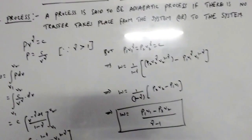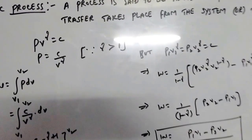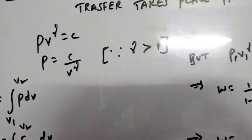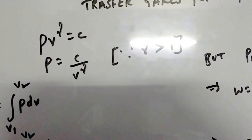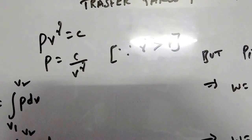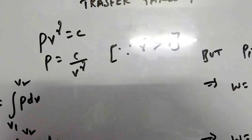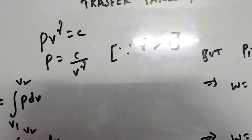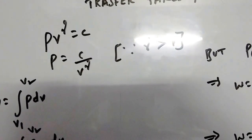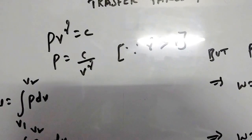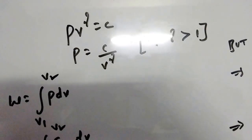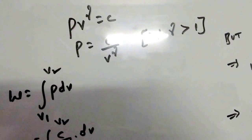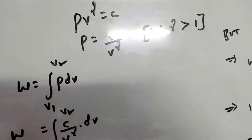We know that the adiabatic equation is PV^γ = constant. From this equation we can write P = C / V^γ, where P is pressure, V is volume, and γ is the adiabatic index. The value of the adiabatic index is always greater than 1 for an adiabatic process.